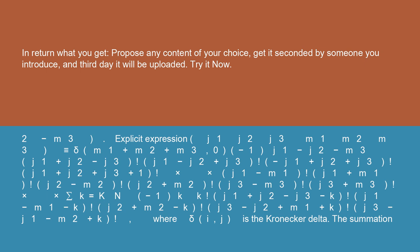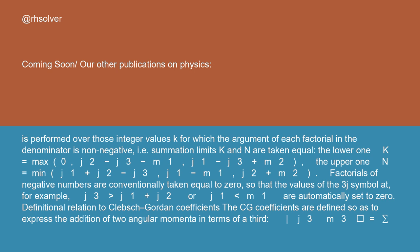Where δ_ij is the Kronecker delta. The summation is performed over those integer values k for which the argument of each factorial in the denominator is non-negative, i.e., summation limits k and n are taken equal: the lower k = max{0, j2 - j3 - m1, j1 - j3 + m2}, the upper n = min{j1 + j2 - j3, j1 - m1, j2 + m2}. Factorials of negative numbers are conventionally taken equal to 0, so that the values of the 3j symbol, for example j3 > j1 + j2 or |j1 - m1|, are automatically set to 0.